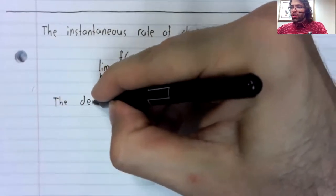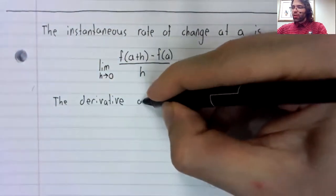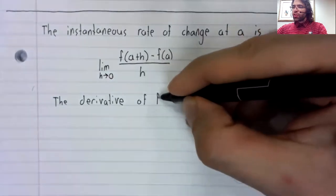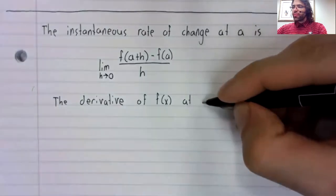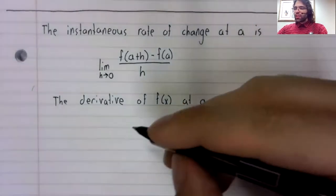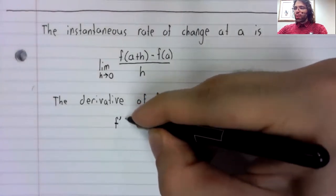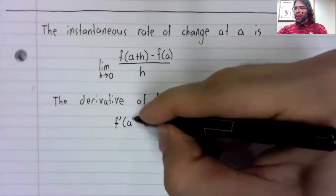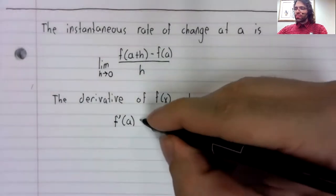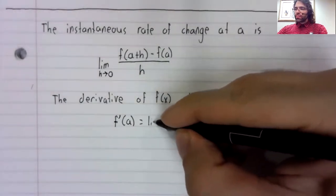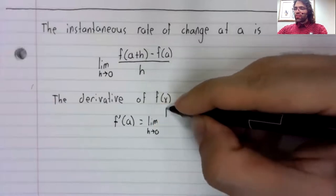The derivative of a function at a has the notation f apostrophe a in parentheses equals this limit.